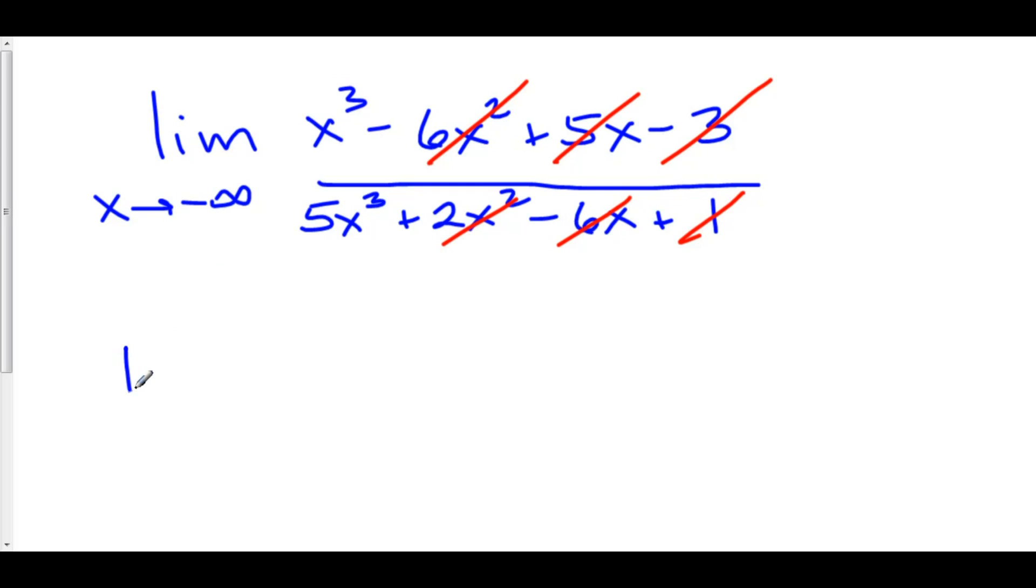And now we can reduce this down to the limit as x approaches negative infinity of... Hey, look. x cubed over x cubed. Boom. Boom. That cancels out. This is just some constant 1 over 5. And so this whole thing is just equal to 1 over 5.